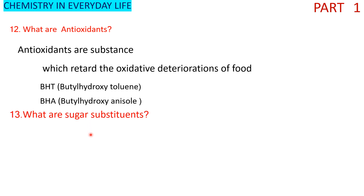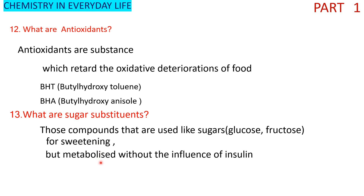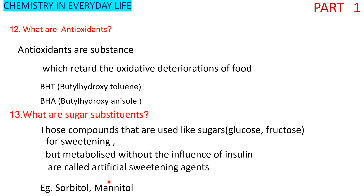What are sugar substitutes? Sugar substitutes such as glucose and fructose are used for sweetening but are metabolized without the influence of insulin. They are also called artificial sweetening agents. Examples are sorbitol and mannitol.